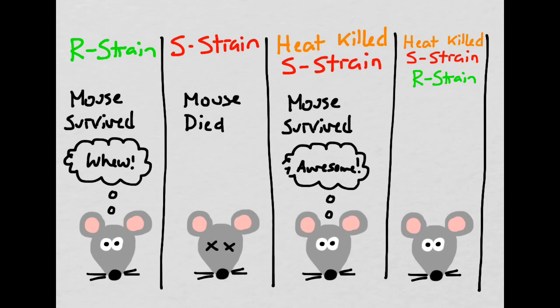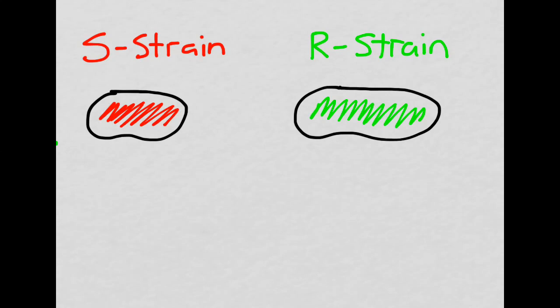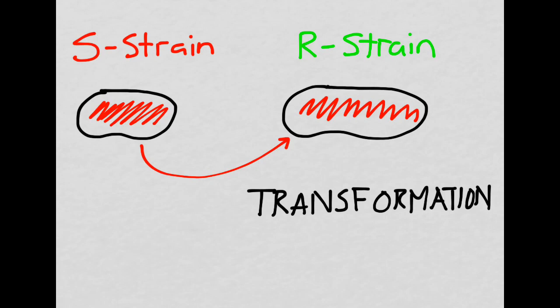Griffith then combined heat-killed S-strain with live R-strain. Remember, R-strain bacteria are not considered to be deadly, and heat-killed S-strain bacteria are not considered to be deadly. However, when he combined the two of them and injected it into the mouse, the mouse died. Griffith hypothesized that even though the S-strain bacteria had been denatured by the heat, there were still components of it that were still active. He thought that the components of the S-strain bacterium were going into the R-strain bacterium and corrupting it somehow. This could cause what was previously an innocuous R-strain to become a toxic R-strain. We call this transformation.